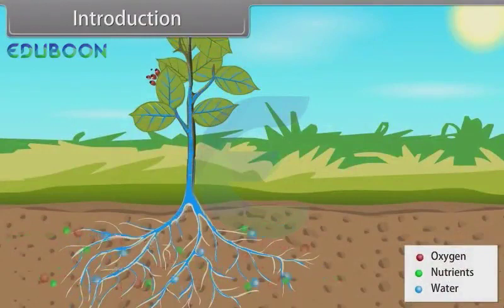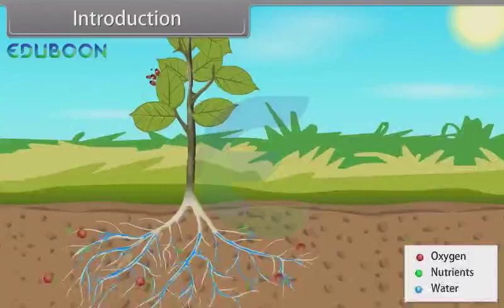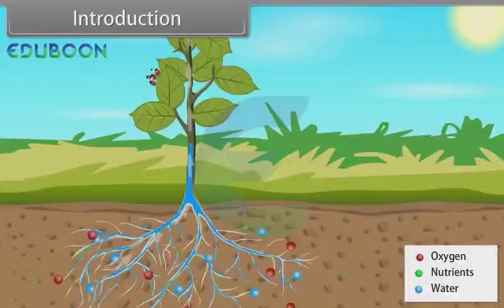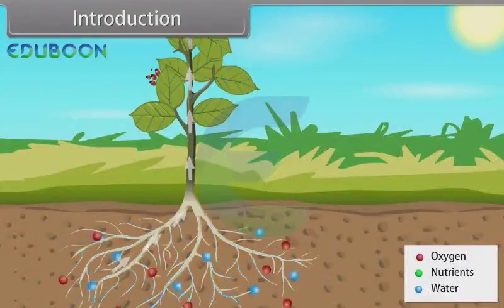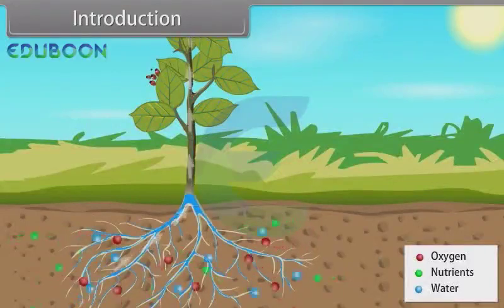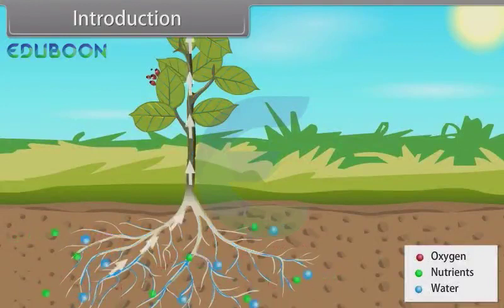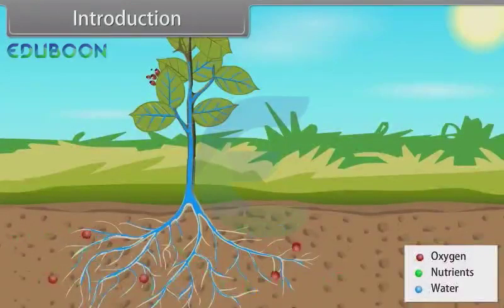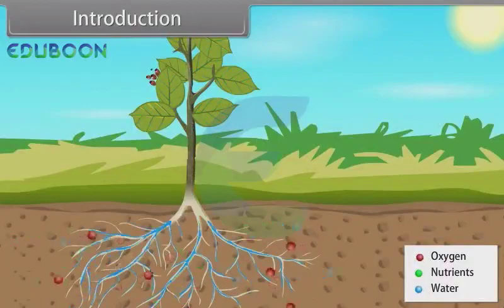One more thing I would like to tell you: there are 5 plant growth regulators. They are auxins, gibberellins, cytokinins, ethylene and abscisic acid.